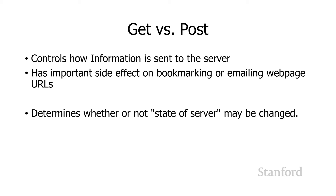So to summarize: GET versus POST controls how information is sent to the server — either encoded into the URL, or enclosed within the HTTP request and not part of the URL. As a consequence, you can bookmark or email URLs using GET and people will get the expected results, whereas with POST, that information is not included in the URL and is lost.